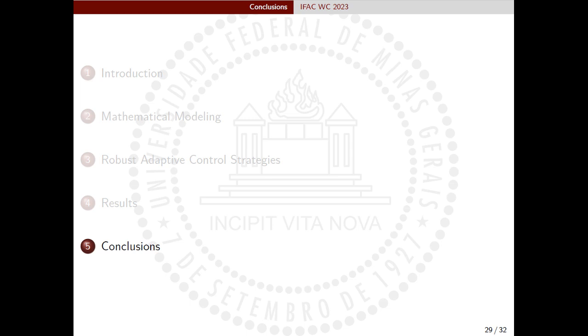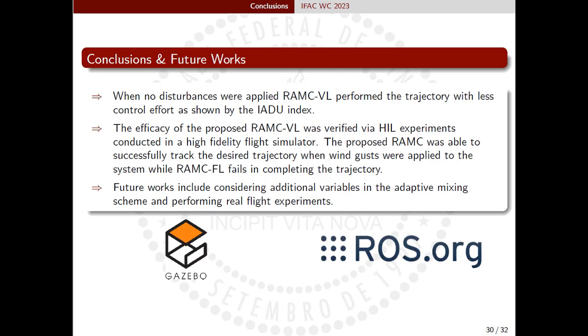Now we are going to conclude the presentation. In conclusion, the efficacy of the proposed RAMC-VL was verified via HIL experiments conducted in a high-fidelity flight simulator. The proposed RAMC was able to successfully track the desired trajectory when wind gusts were applied to the system while RAMC-FL fails in completing the trajectory. In addition, when no disturbances were applied, RAMC-VL performed the trajectory with less control effort, endorsing our claim of reducing conservatism.